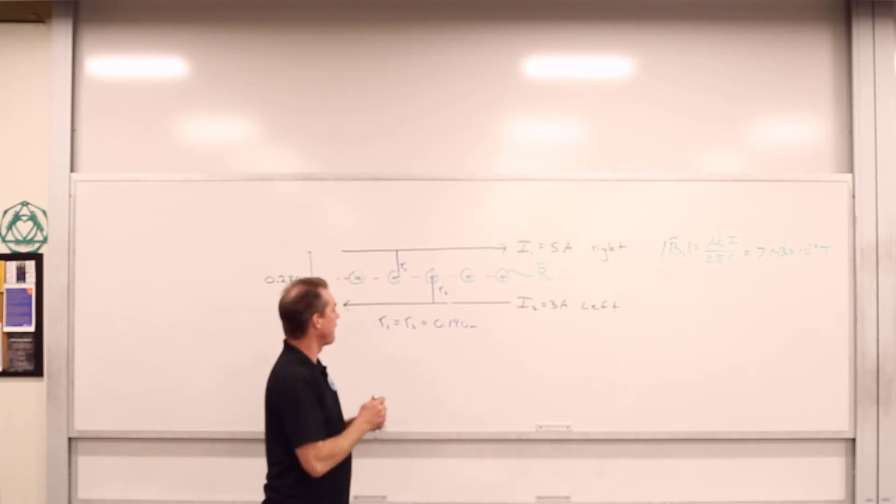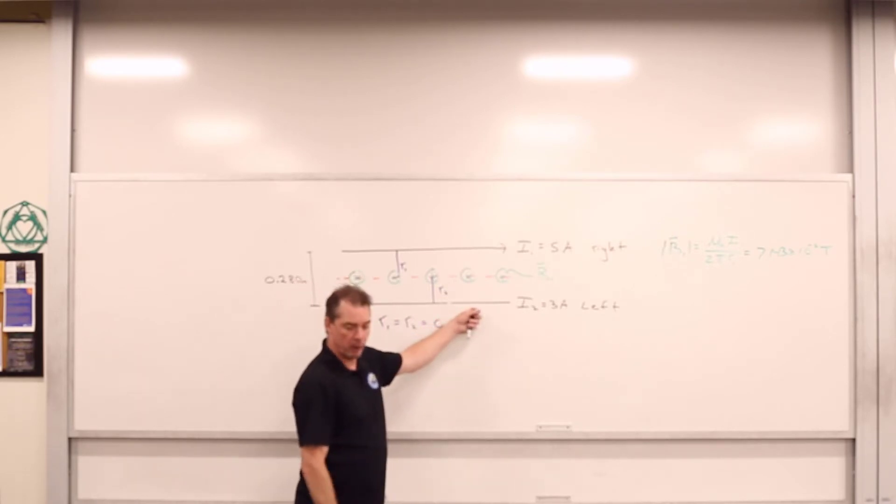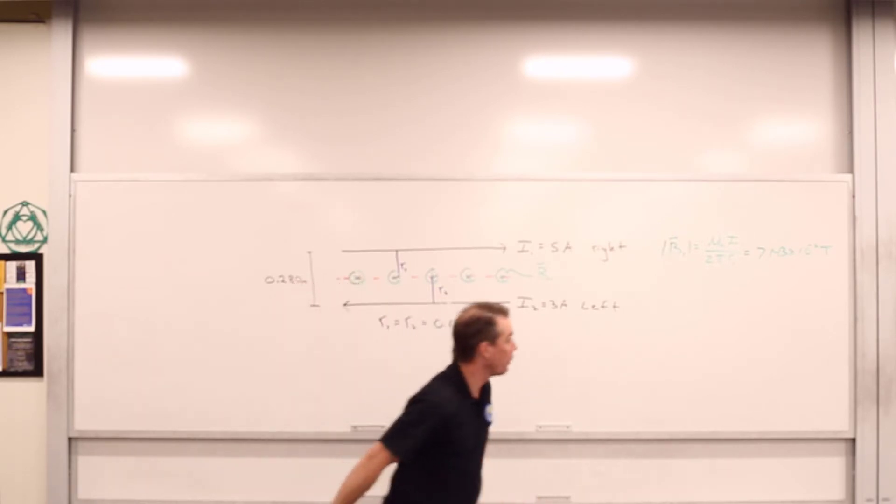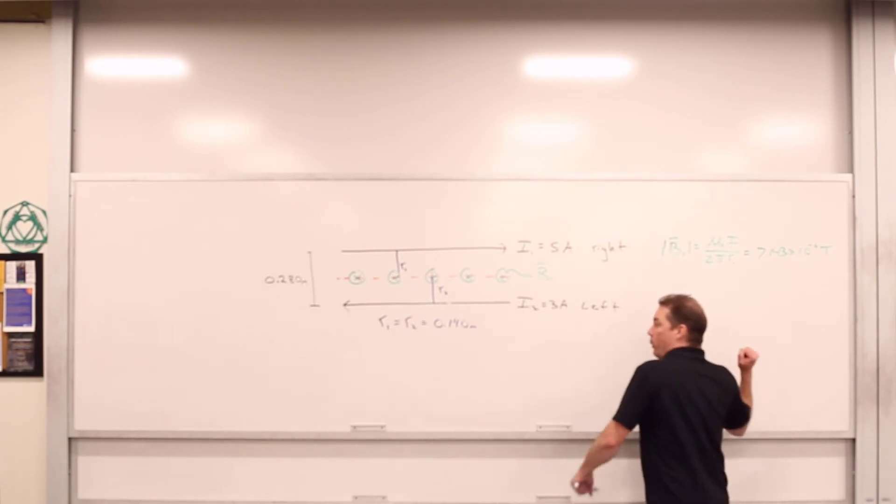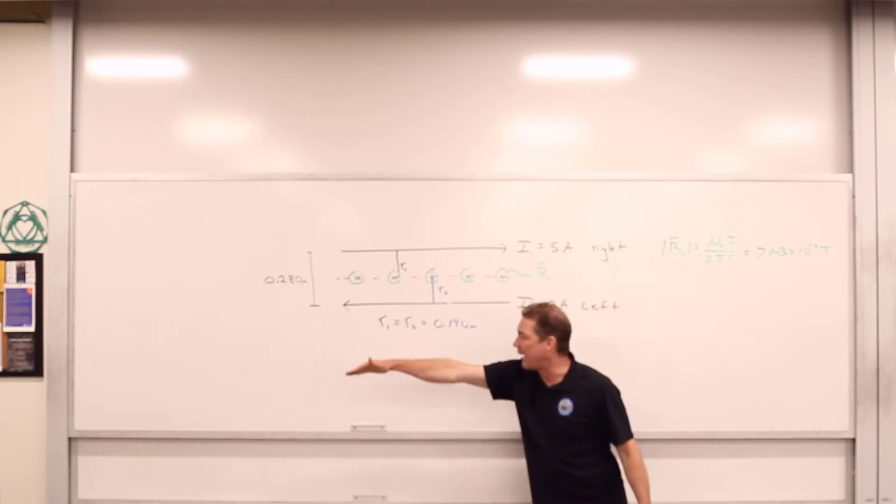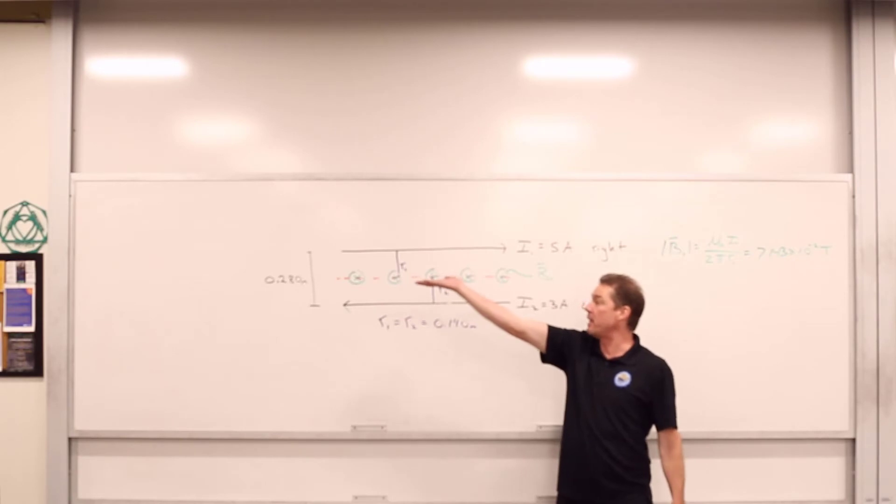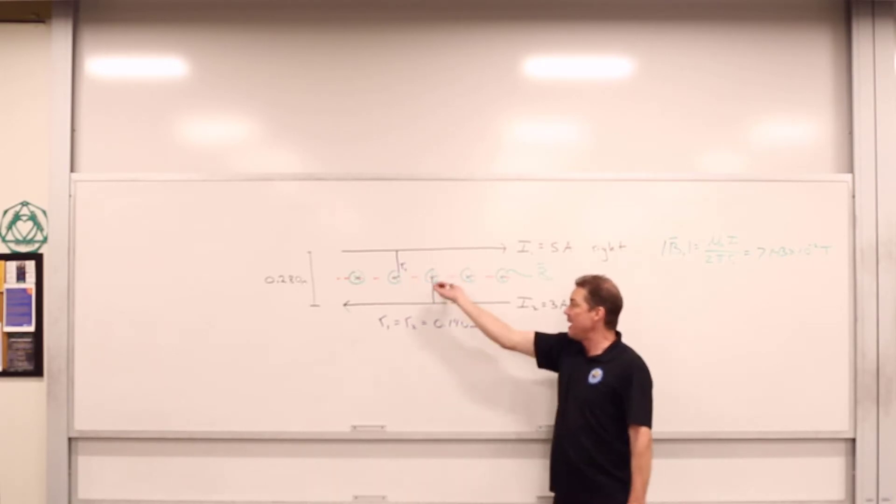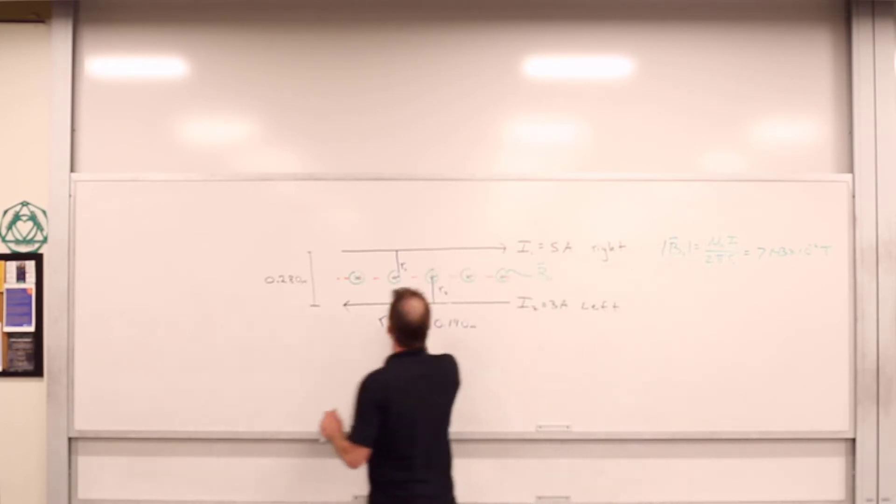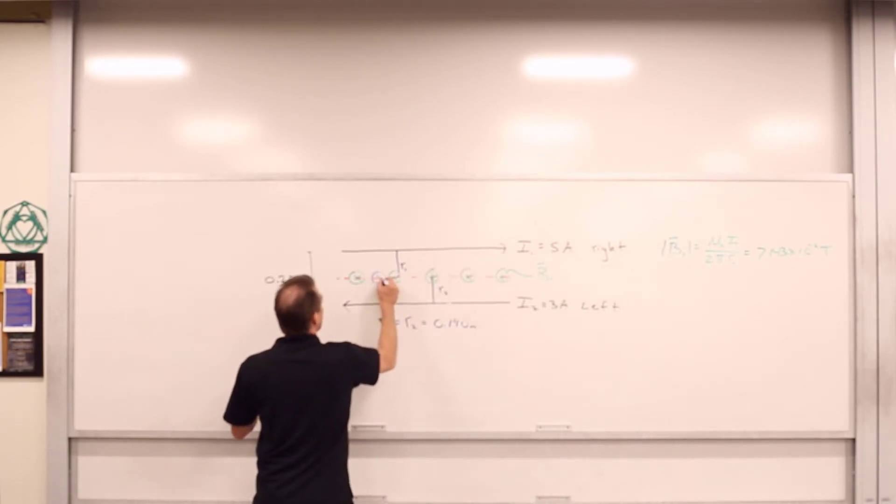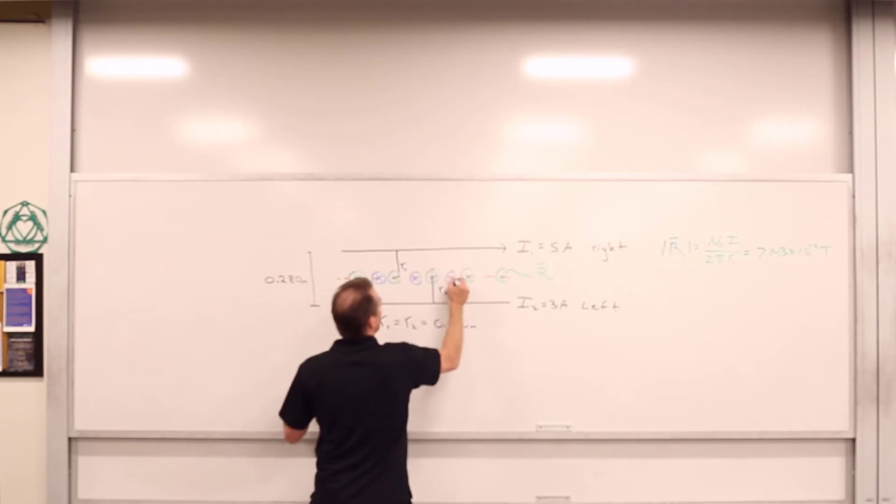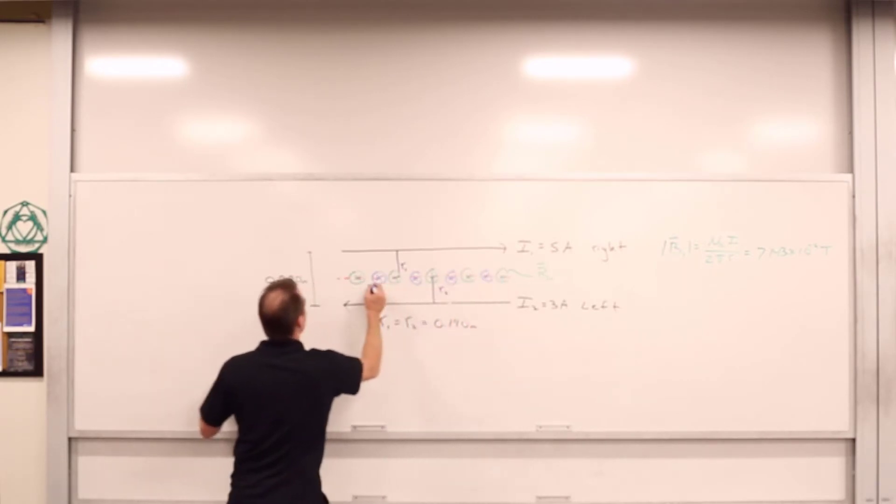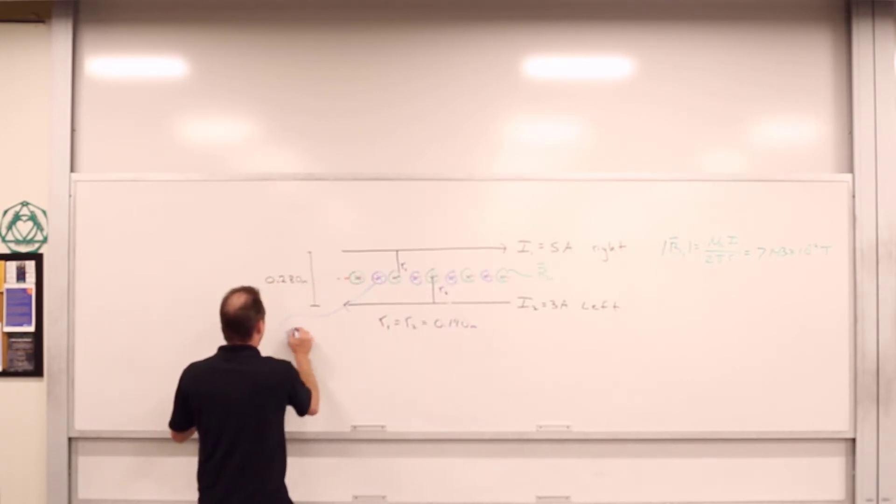Anyway, we'll do the same thing for current carrying wire number 2. Well, current carrying wire number 2 has a current going to the left. We are looking at a position above it. So it too produces a magnetic field that is directed into the board anywhere above it. So along this line, we've got ourselves B hat 2.